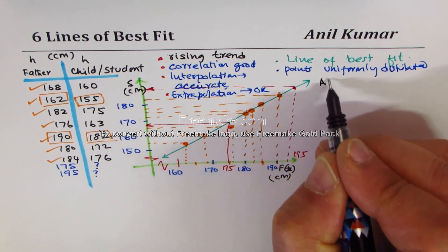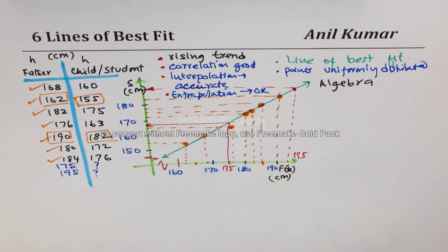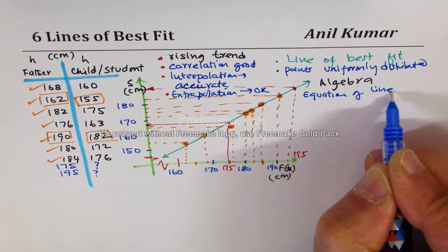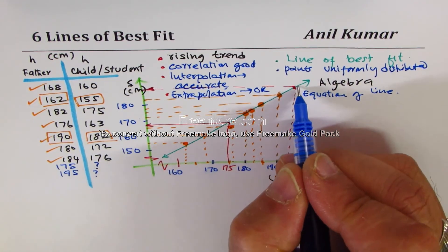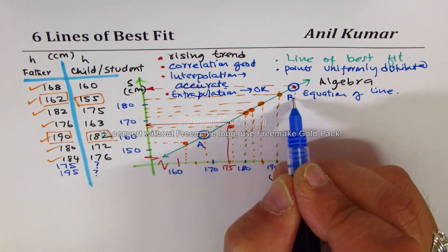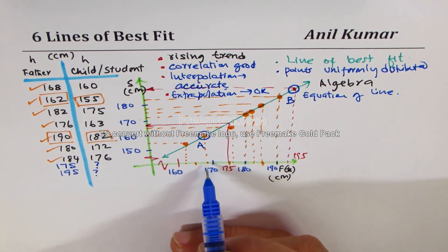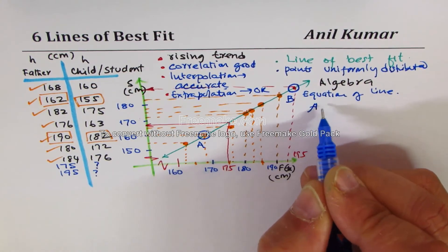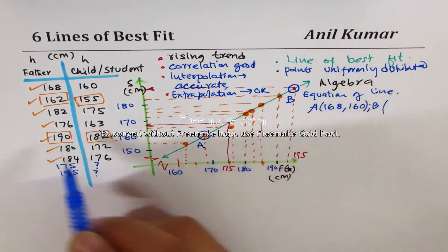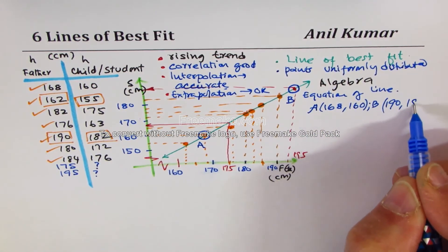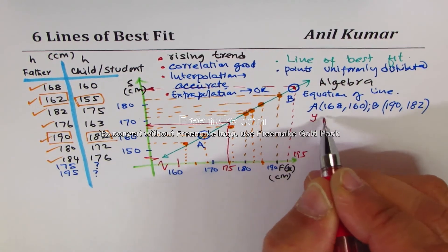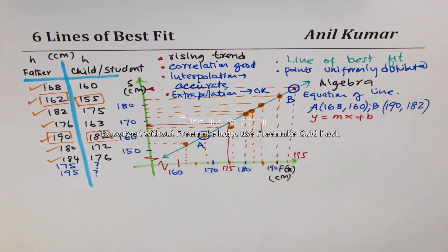We could also find answers using algebra — finding the equation of the line. So now we will see how to find the equation of the line of best fit. Using two points: let's call point A and point B. Point A we chose was slightly less than 170, so let it be 168 — so A is (168, 160).